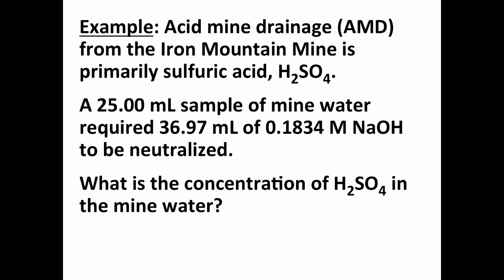Our first example is of a sample of acid mine drainage from the Iron Mountain mine just outside of Redding, California. What happens when mining is done, if the rocks that are cut into contain sulfur and that is exposed to the atmosphere and to water, sulfuric acid is produced.